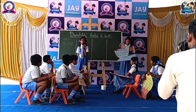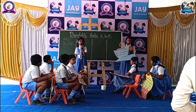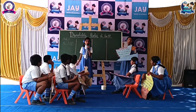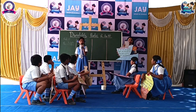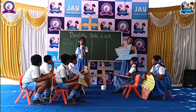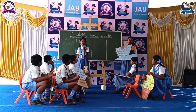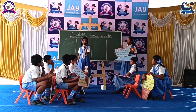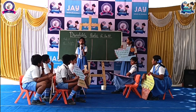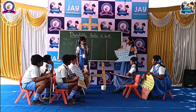Now I am going to teach the divisibility test for 3. The condition of the divisibility test for 3 is: if the sum of all the digits is divisible by 3, then the given number is also divisible by 3. Let's see one example.